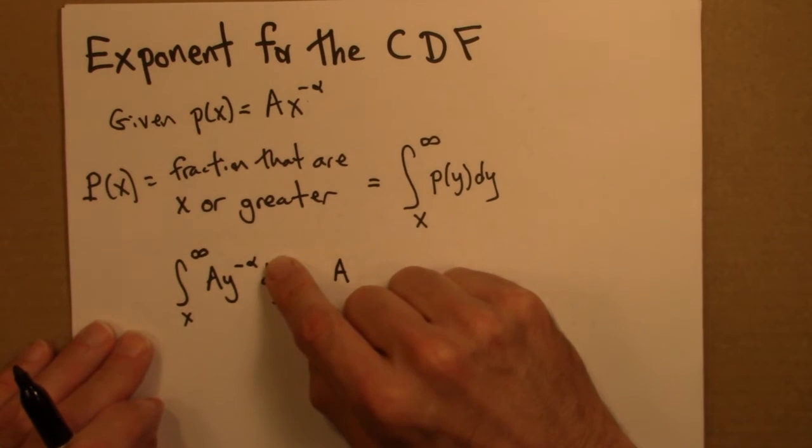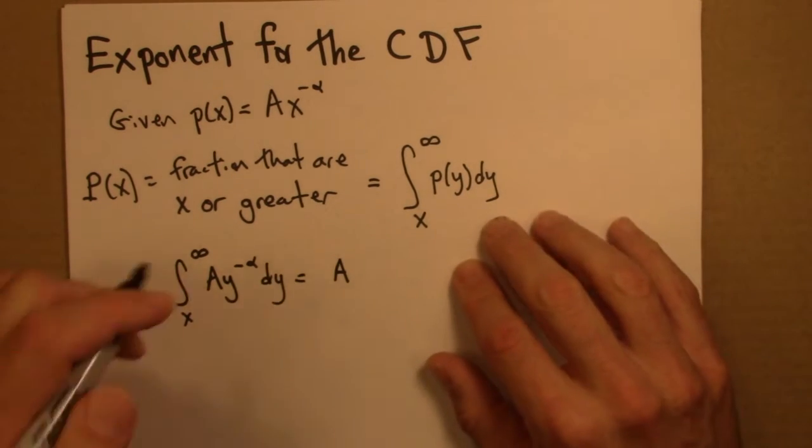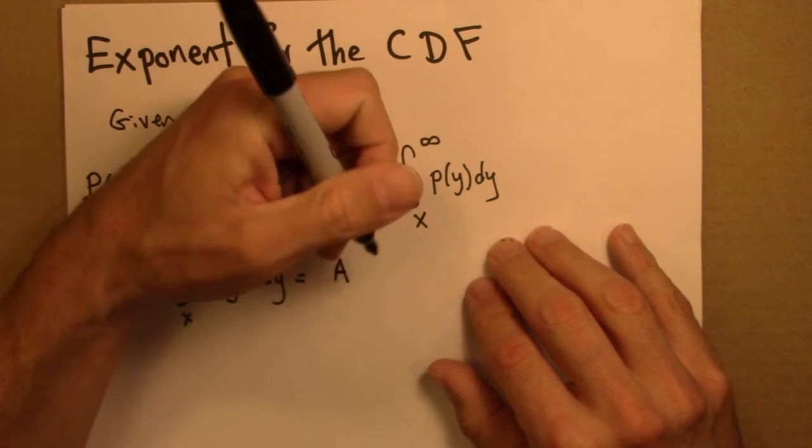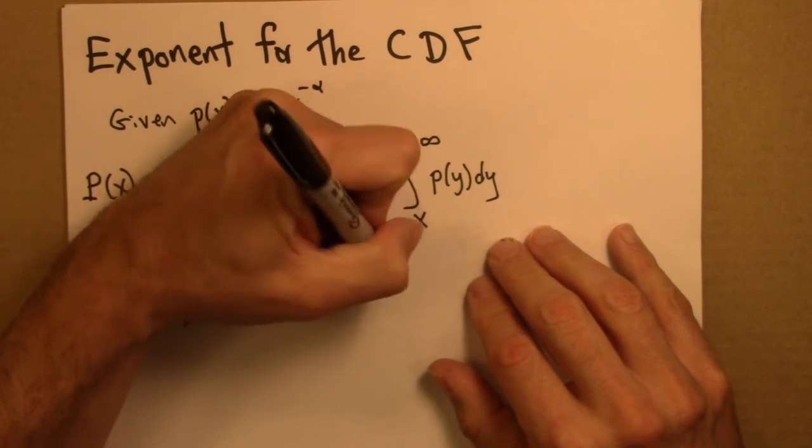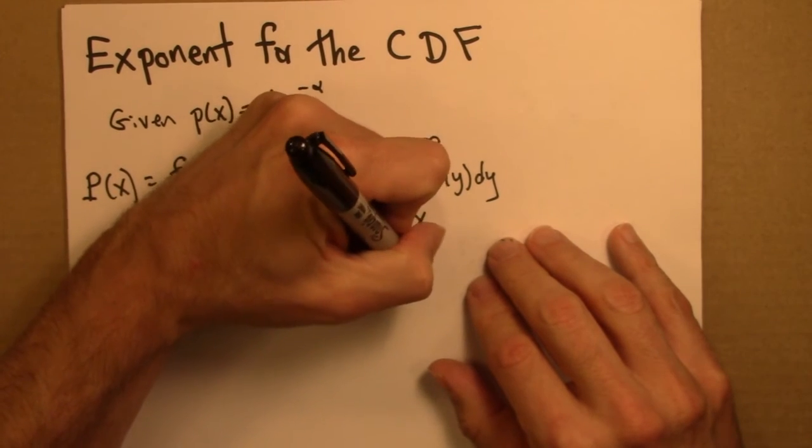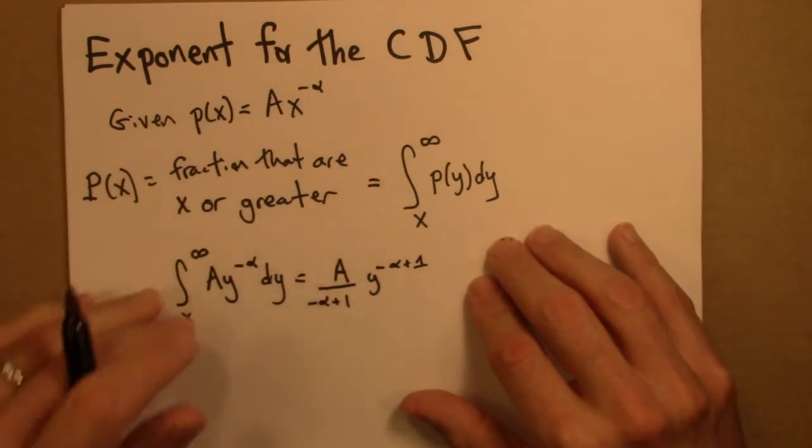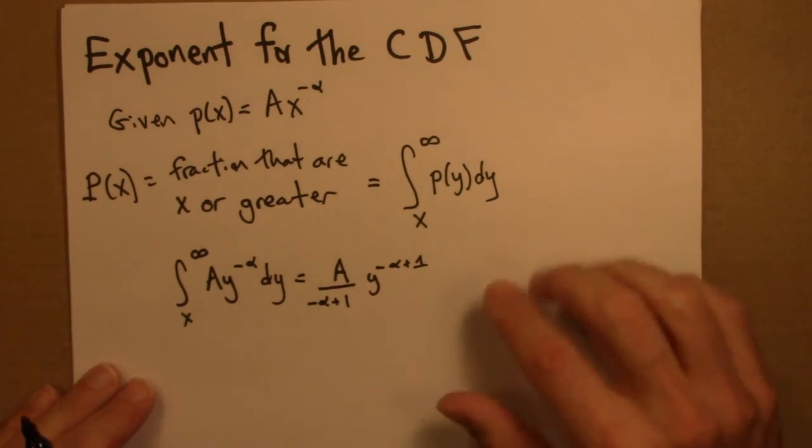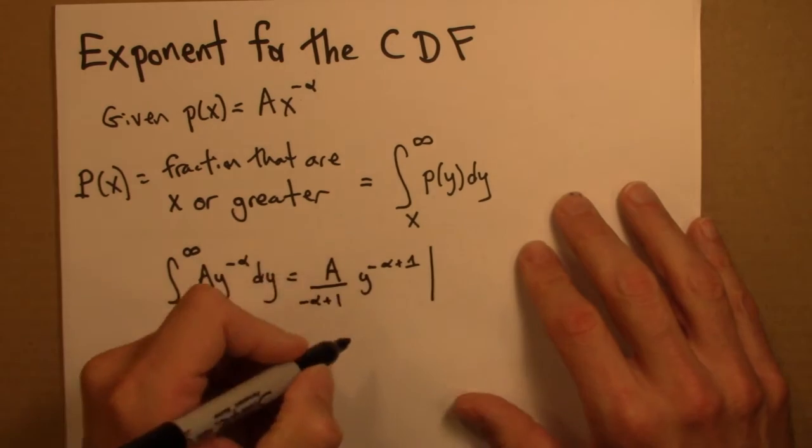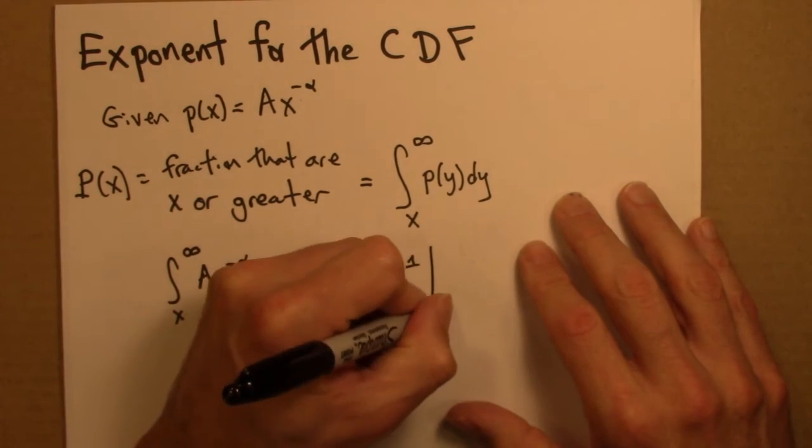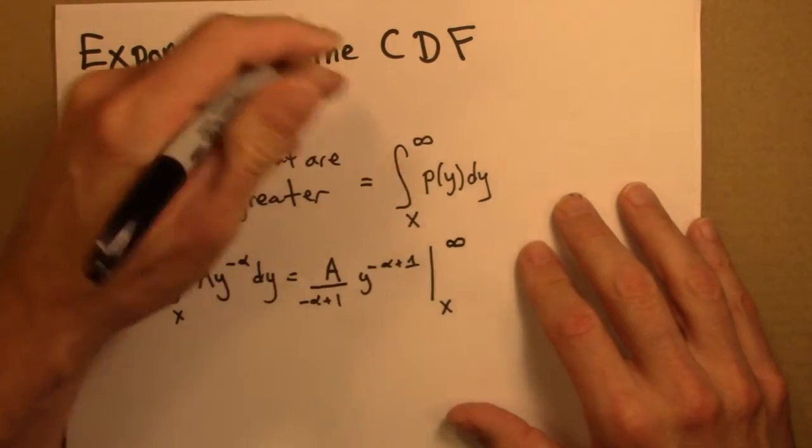So I add 1 to the exponent. This becomes y to the minus alpha plus 1. And I need to divide by minus alpha plus 1. And then I evaluate this from x to infinity. It's a definite integral.